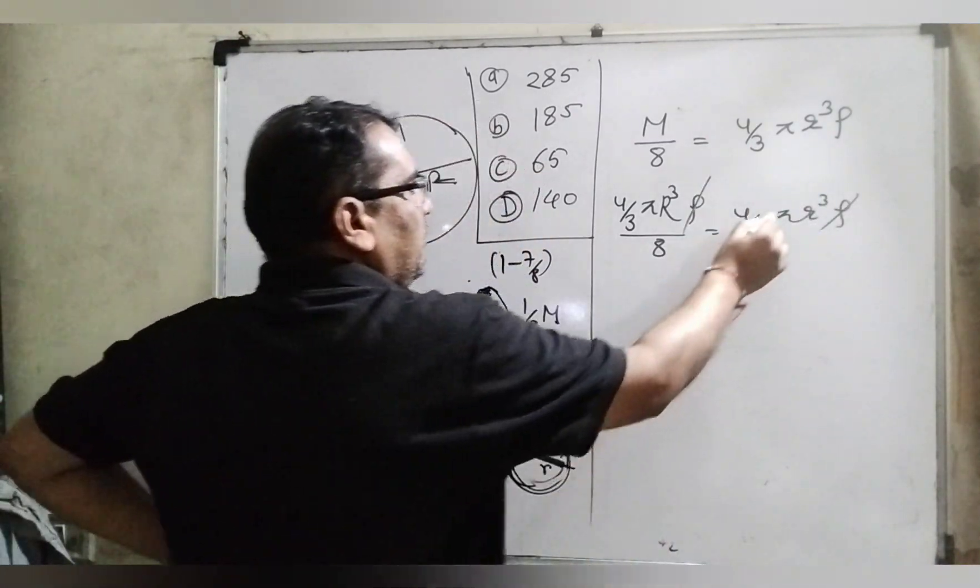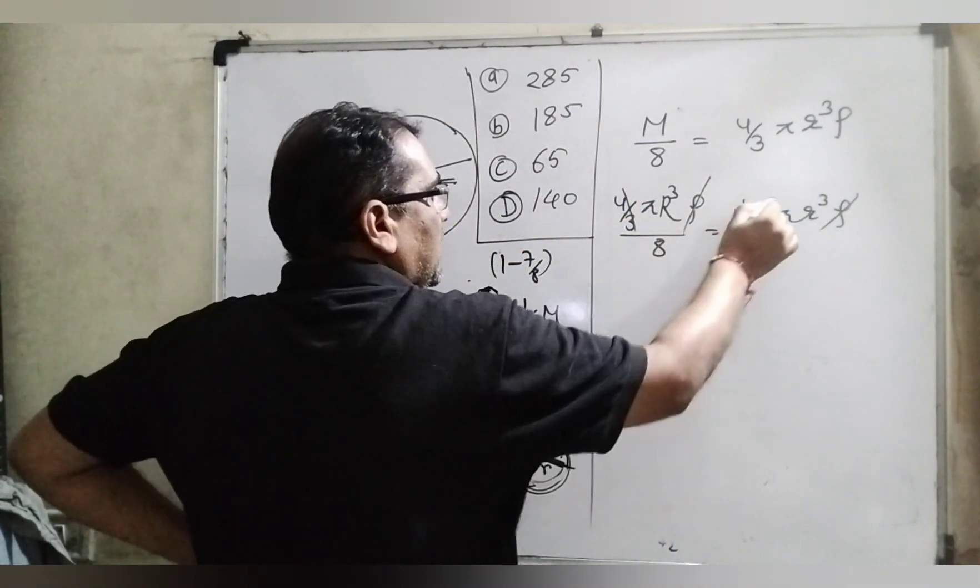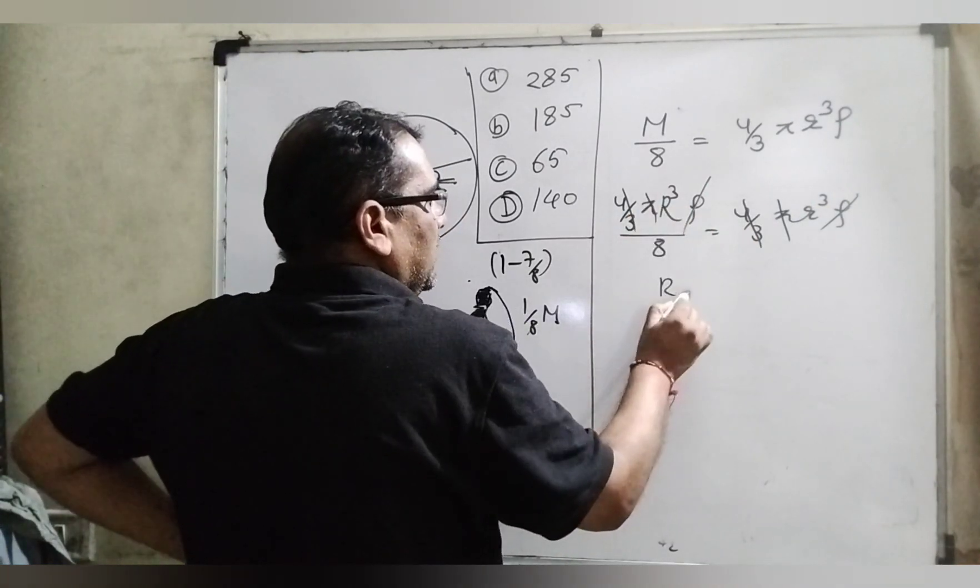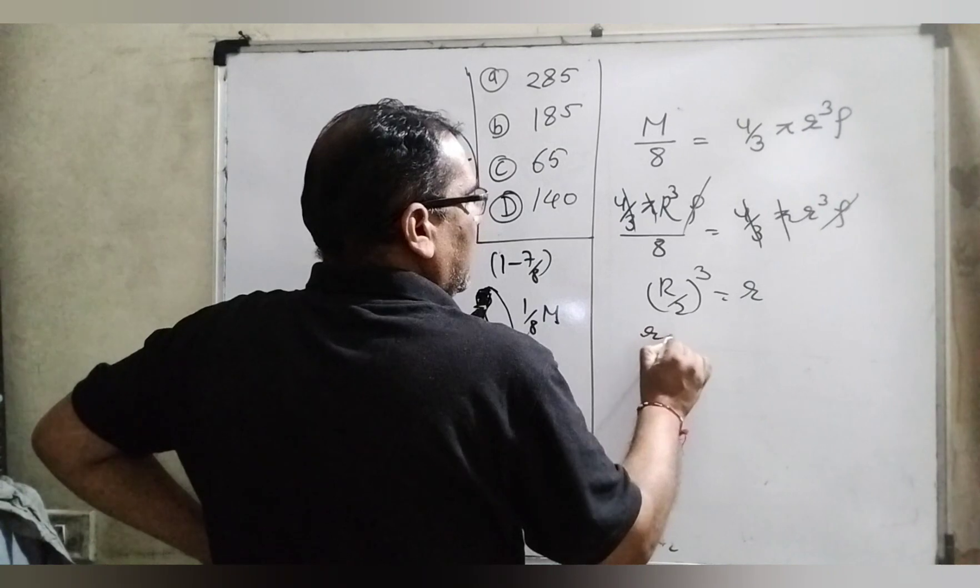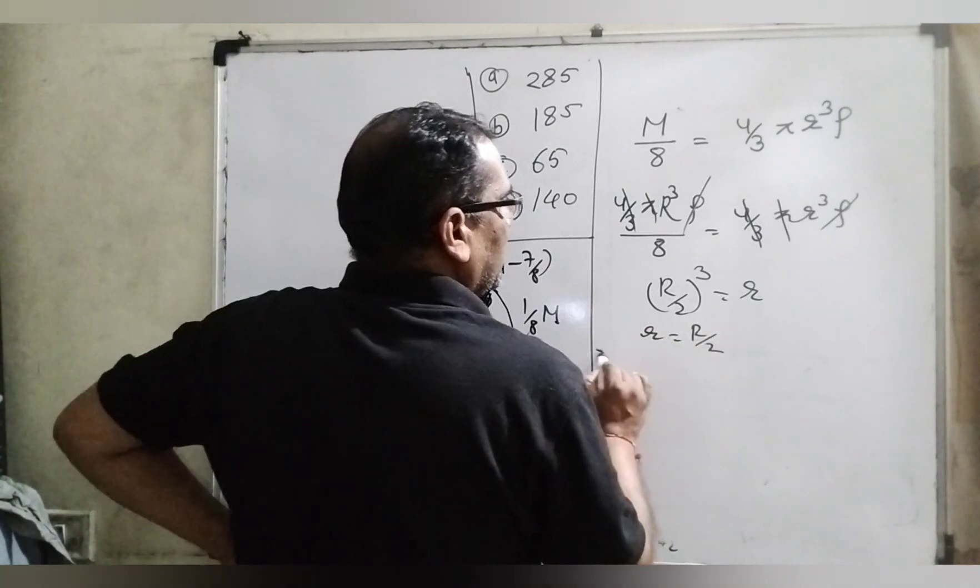Density cancels out, 4 by 3 cancels out, pi cancels out. Then R cubed by 8 equals r cubed. It means r equals R/2.